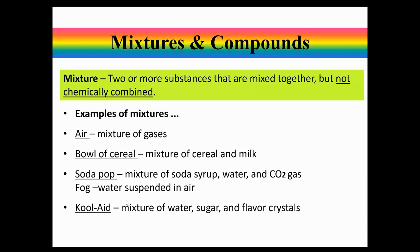Let's talk about the difference between mixtures and compounds. Mixtures are two or more substances that are mixed together but not chemically combined — you could have a bowl with sugar and salt mixed together, and even if dissolved in water, they remain two separate substances. Examples of mixtures include air, which is mostly nitrogen with about 16% oxygen and some other compounds, and a bowl of cereal is a mixture of cereal and milk.